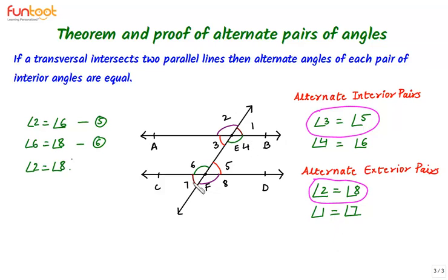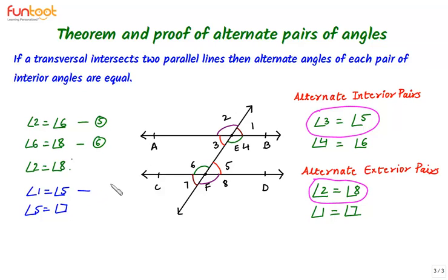Next we pick the other pair, that is angle 1 and angle 7. Let's identify a pair of corresponding angles which includes either angle 1 or angle 7 — that can be angle 1 and angle 5. Angle 1 is equal to angle 5 by the corresponding angle axiom — call this equation 7. And angle 5 is equal to angle 7 by vertically opposite angles — call this equation 8. From equations 7 and 8, we have angle 1 is equal to angle 7.